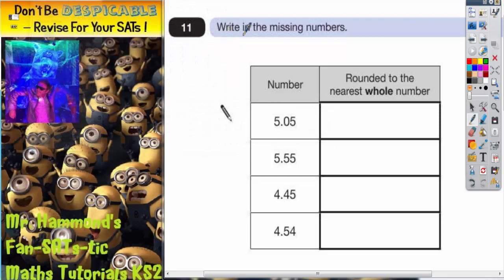Ok, question 11 says write in the missing numbers. So in this column here we've got our numbers 5.05, 5.55, 4.45 and 4.54. And we're asked here, it says rounded to the nearest whole number.